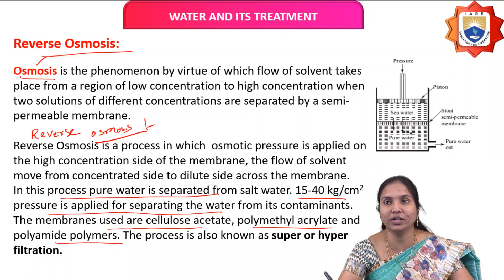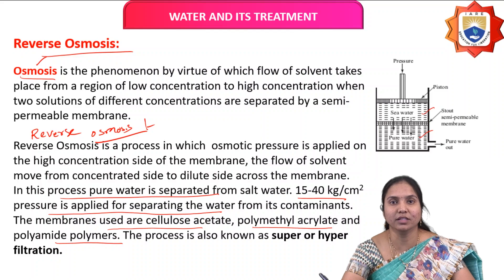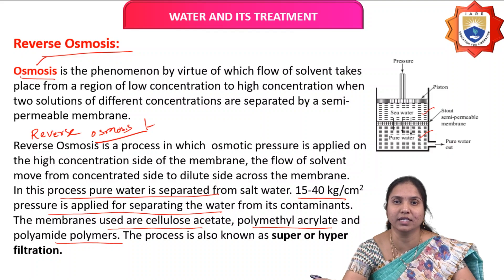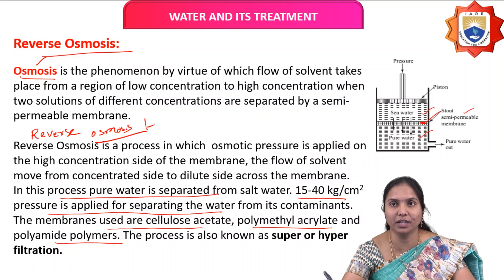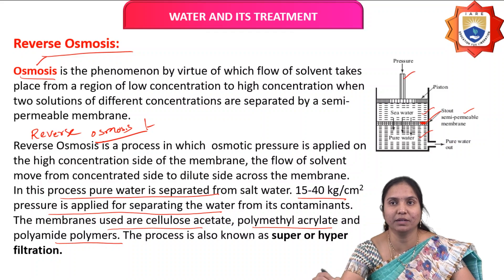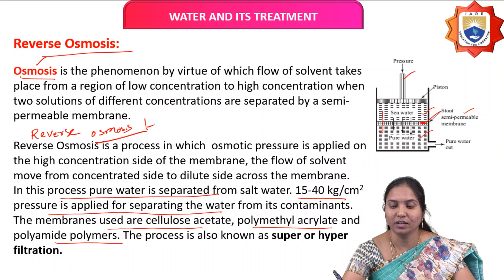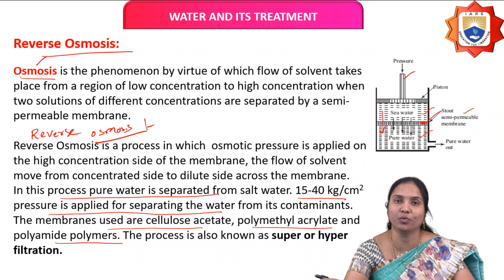Looking at the diagram: two solutions of different concentrations — seawater and pure water — are separated by a semipermeable membrane. Seawater has a higher concentration compared to normal water. When osmotic pressure is applied, the solvent flows from high concentration to low concentration — that is, seawater is converted to pure water through the semipermeable membrane.